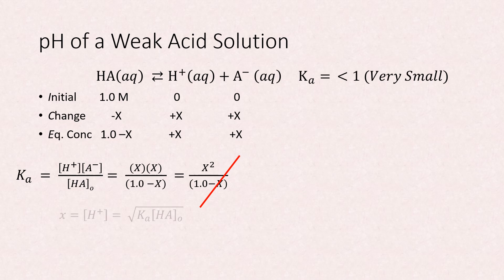Solving for x, which is the concentration of H plus at equilibrium, gives the equation square root of the equilibrium constant times the initial concentration of HA. And the pH is the negative log of this equation. This will be our approximation equation for all weak acids.